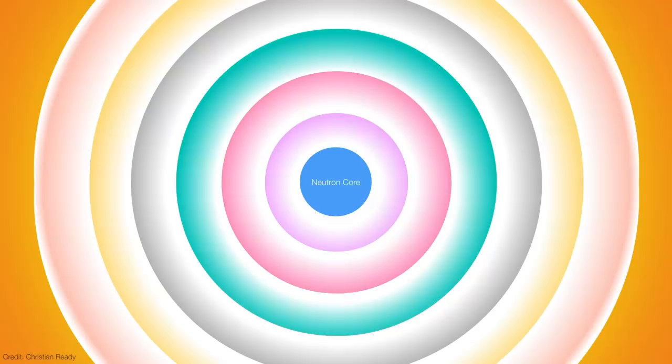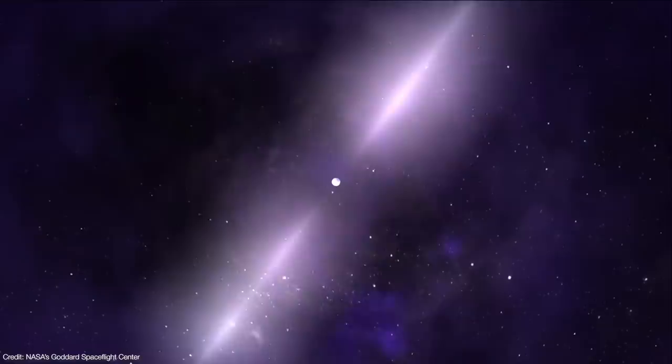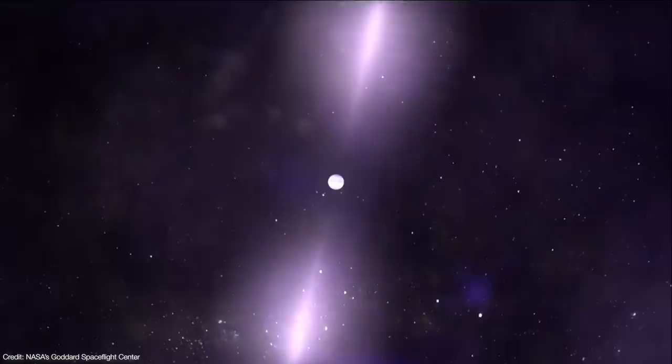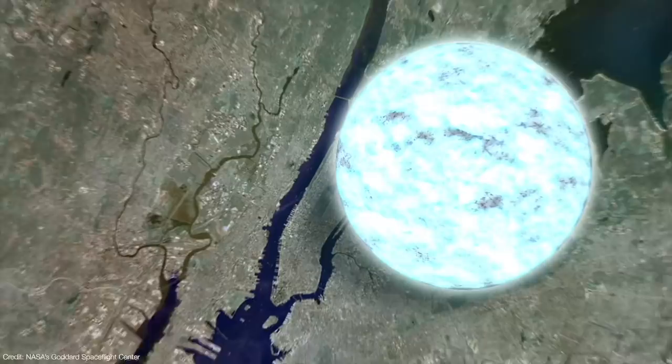In our previous video on neutron stars, pulsars, and magnetars, we learned that they form when the cores of massive stars collapse, setting off a supernova. These objects are so mind-bogglingly dense, protons and electrons are squeezed together to create neutrons. A neutron star is essentially a giant atomic nucleus, more massive than the sun, yet squeezed into a sphere the size of a city.